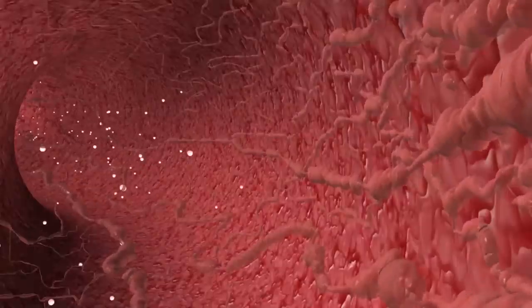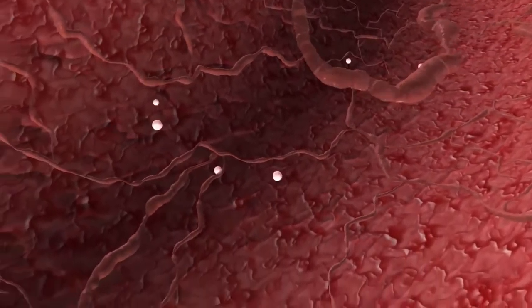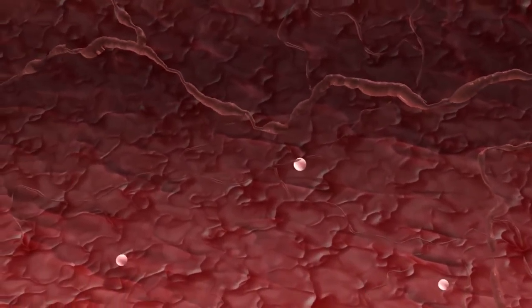Regenerating tissue needs blood to survive. In living systems, that's done by capillaries, branching networks of tiny blood vessels, each ten times thinner than a human hair.